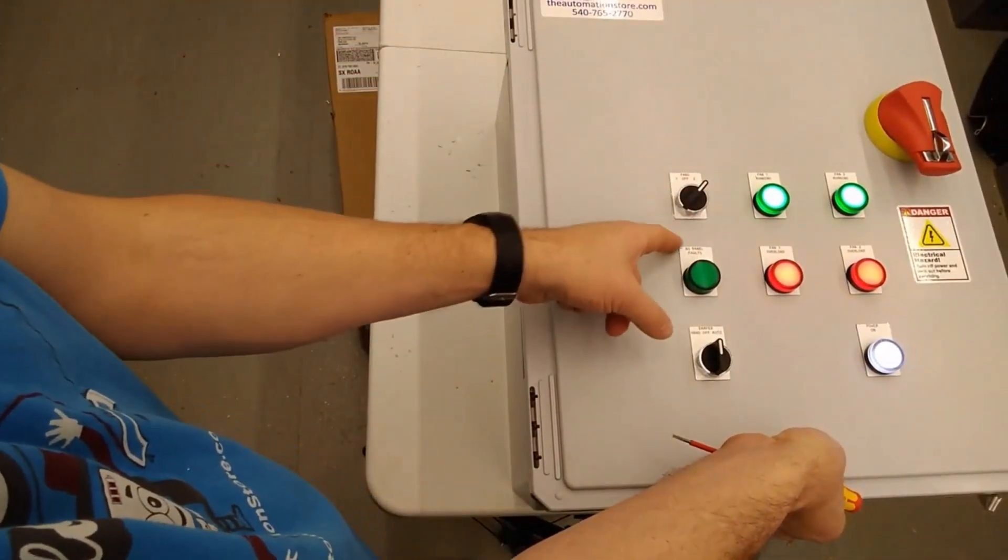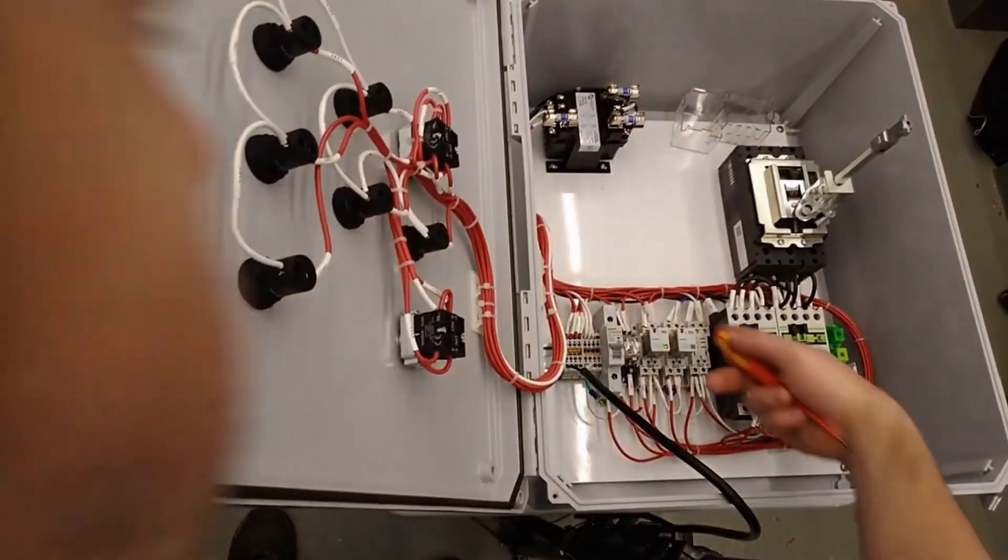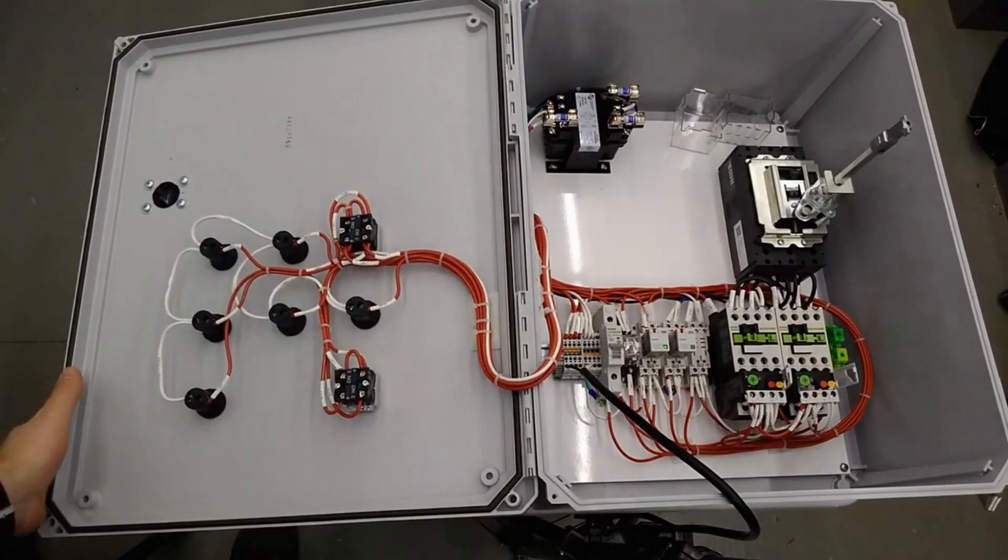I didn't note there but in all those situations you'll see the panel fault light went out which corresponds with this relay dropping out which breaks the continuity of that circuit.